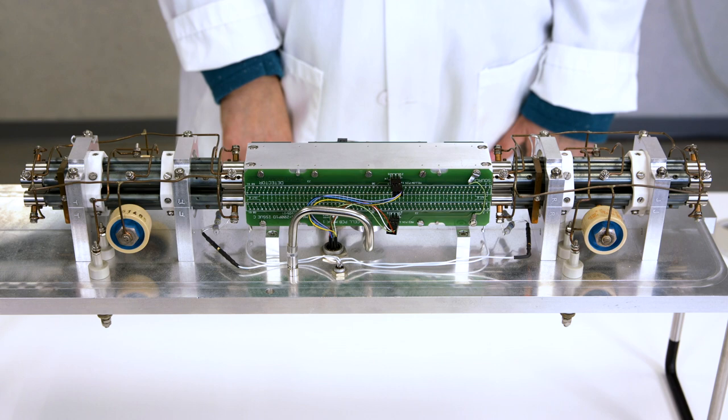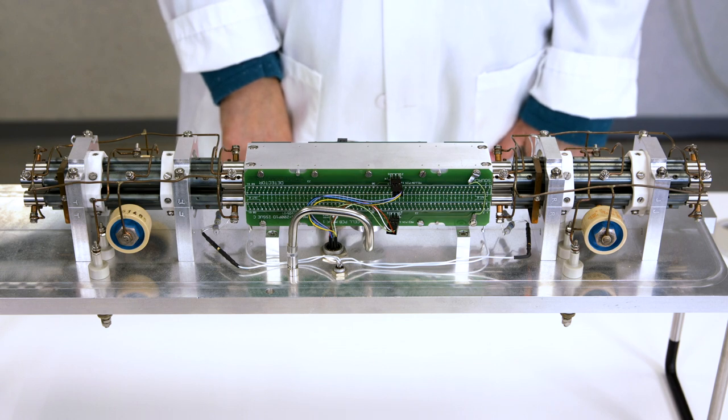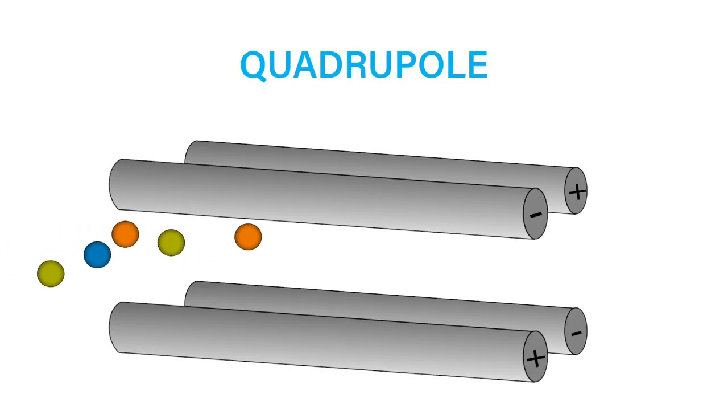Let's take a closer look at how a quadrupole works. Within the quadrupole assembly, a fluctuating field is created by applying RF and DC voltages to the quadrupole rods. Opposite rods have the same voltages applied.